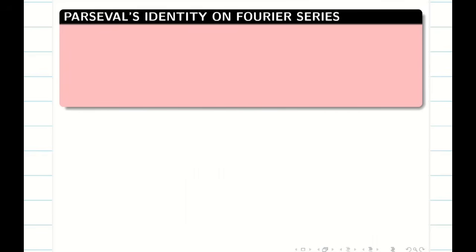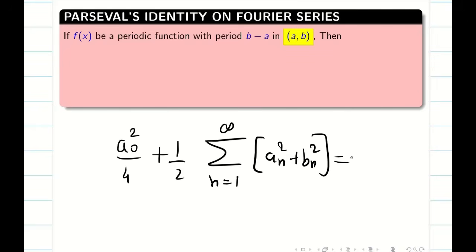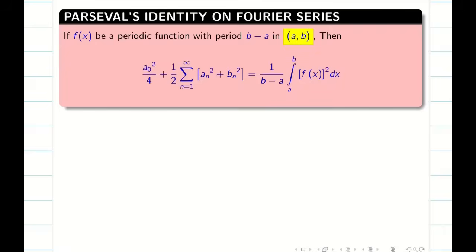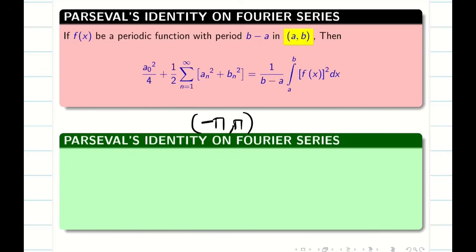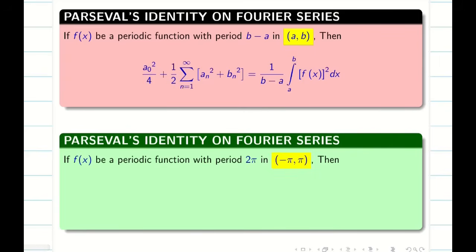We use Parseval's identity to deduce results for higher powers. In general for interval a to b, a naught squared by 4 plus 1 by 2 times the summation of (a n squared plus b n squared) equals 1 by (b minus a) times the integral from a to b of f of x whole square dx. The right-hand side is y bar squared, the square of the RMS value. For our interval minus pi to pi, 1 by (b minus a) becomes 1 by 2 pi.